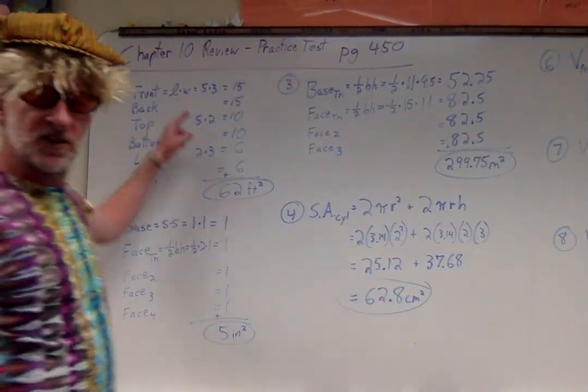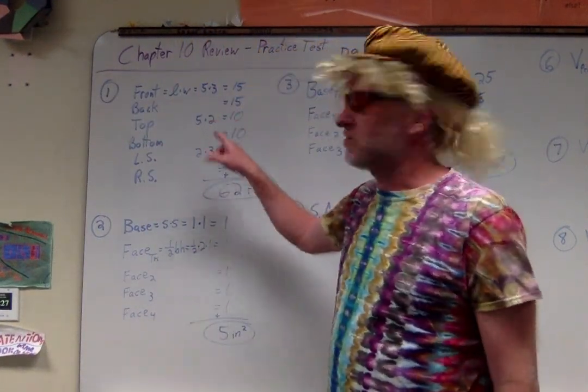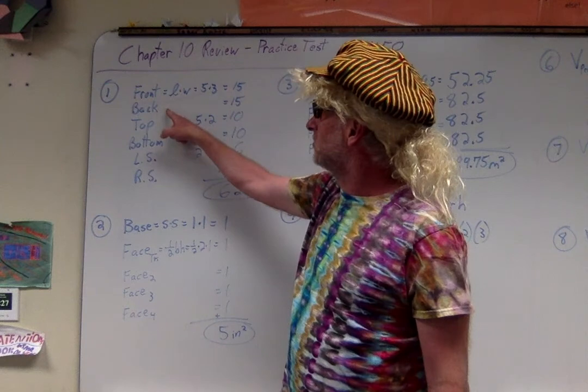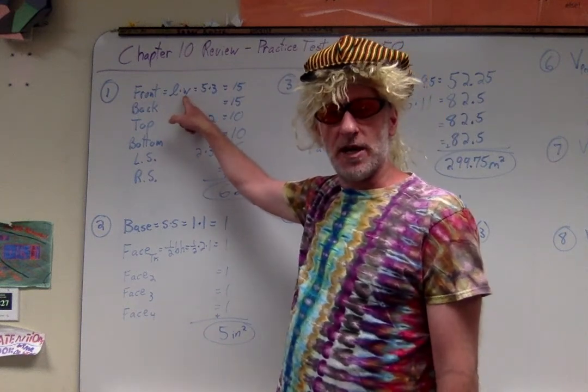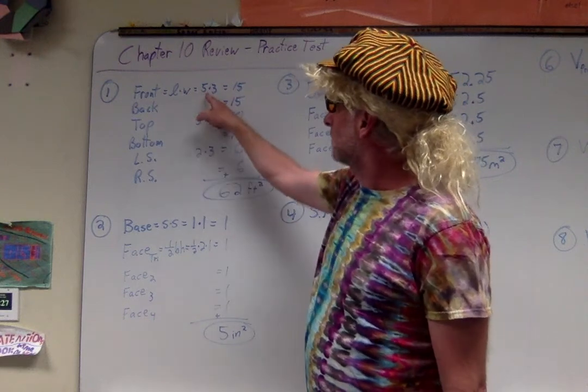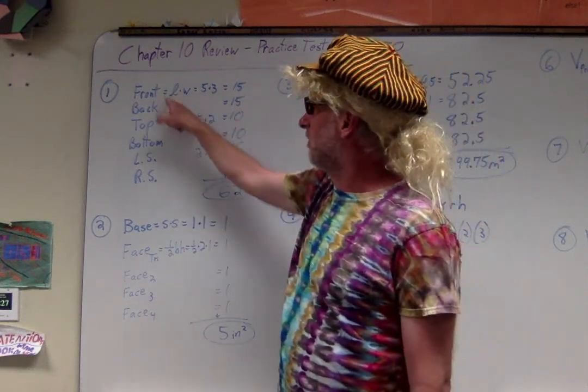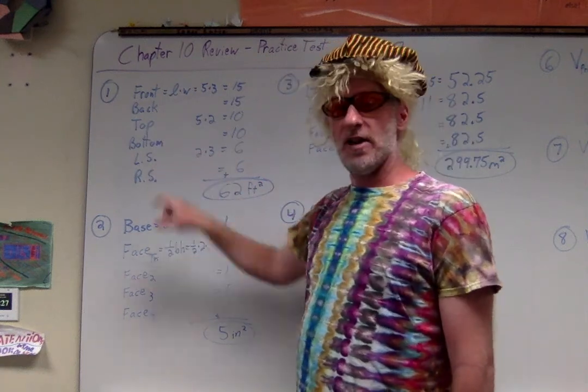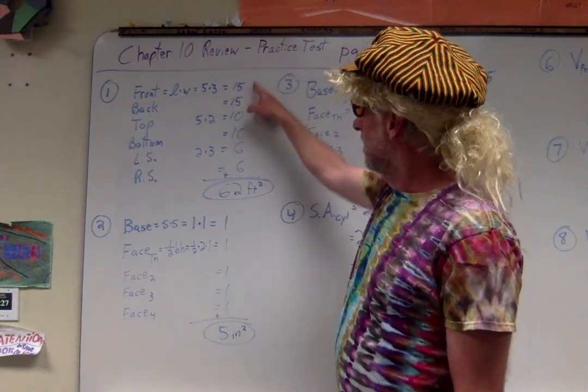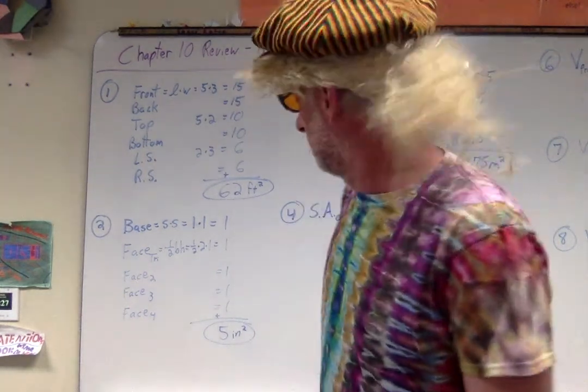We started off with number one. We have to find the surface area. Looks like we're finding the surface area of a rectangular prism because I already have my front and back as length times width. That's how you find the area of a rectangle. Notice I have three different multiplication problems that I doubled because there's a front and back, a top and bottom, a left side and a right side. Then I add them all up: 62 feet squared.